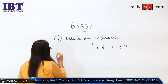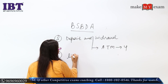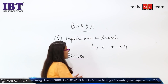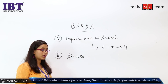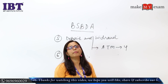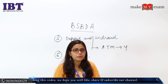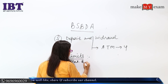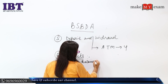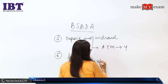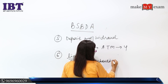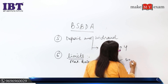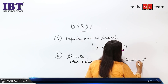Now let's talk about the different limits provided under Basic Saving Bank Deposit Account. First, if your account is checked, the maximum balance at any point in time should not exceed ₹50,000. The balance should not cross or exceed ₹50,000 at any time.